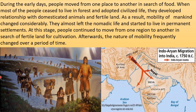When most of the people ceased to live in forests and adopted civilized life, they developed relationships with domesticated animals and fertile land. We all know that early man was a nomad — he led a nomadic life and was a hunter and food gatherer. He was always roaming in search of food and also to protect himself from wild animals and nature. Later he started to settle down near the river valleys, living with his family and leading a settled life. As a result, the mobility of mankind changed considerably. They almost left the nomadic life and started to live in permanent settlements, continuing to move from one region to another in search of fertile land for cultivation.